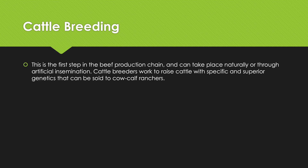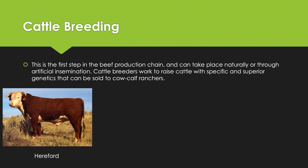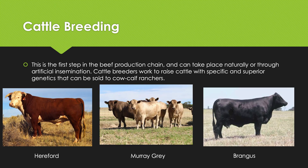The first step in the beef production chain can take place naturally or through artificial insemination — we're talking about cattle breeding. Cattle breeders work to raise cattle with specific and superior genetics that can be sold to cow-calf ranchers. You may be a Hereford breeder, breed Murray Grays, or breed Brangus. You tend to stick to one breed, claim to have the highest quality genetics, and their offspring would have to meet market specifications.